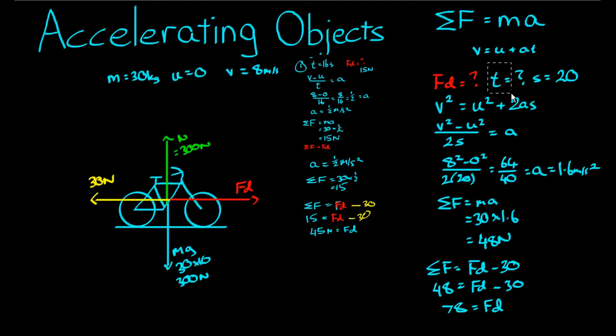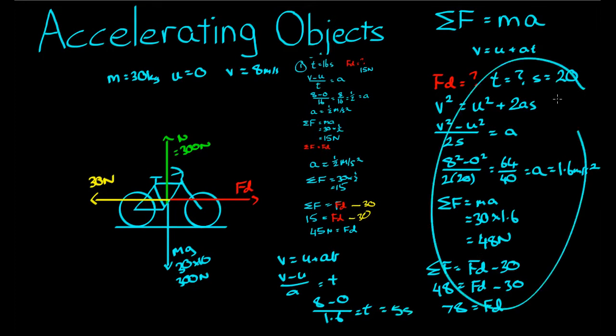One final thing I'd like to work out here is how long it took for that bike to accelerate through those 20 meters from 0 meters a second to 8 meters per second. And I realized we can actually use that equation there. V equals u plus at. V take u on a equals t. 8 take away 0 over the acceleration we found was 1.6 equals t, which is equal to 8 divided by 1.6, 5 seconds. So the bike took 5 seconds to accelerate in this case over here.